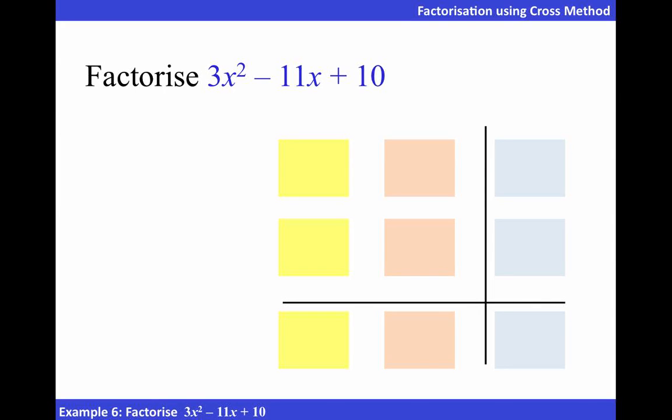Let's factorize the following using cross method. First of all, let's look at the coefficients of x squared. To get 3x squared, we can have x times 3x.